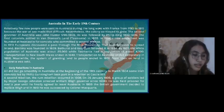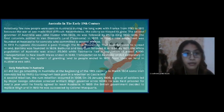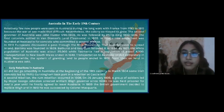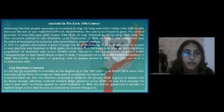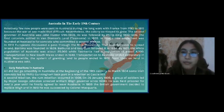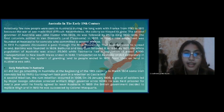Australia in the early 19th century. Relatively few new people were sent to Australia during the long wars with France from 1793 to 1815 because the war at sea made that difficult. Nevertheless, the colony continued to grow. The second governor of Australia was John Hunter, followed by Philip King. The first colony settled in Van Diemen's Land, or Tasmania, in 1803.